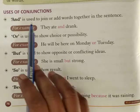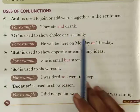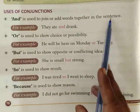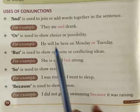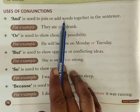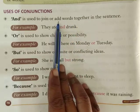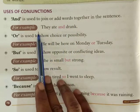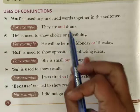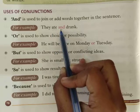Now, the uses of conjunctions. 'And' is used to join and add words together in a sentence — when we have to put two words together in one sentence. For example: they ate and drank. Here, 'and' joins the two words.